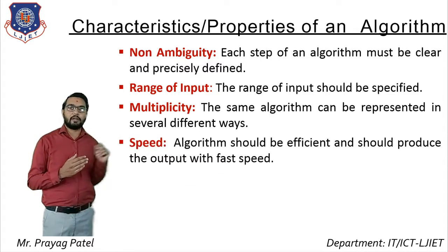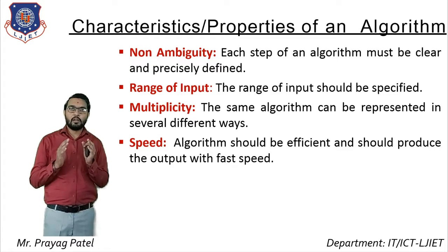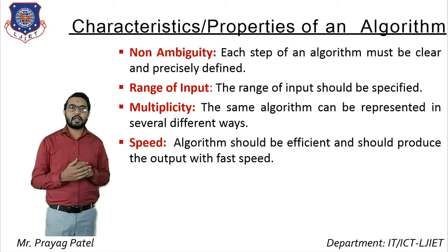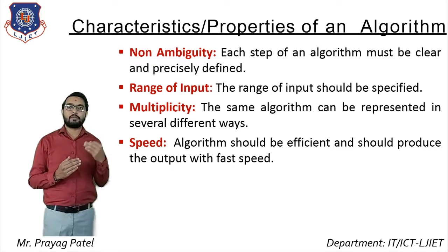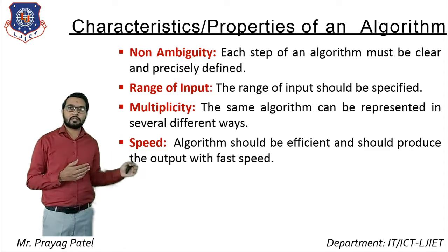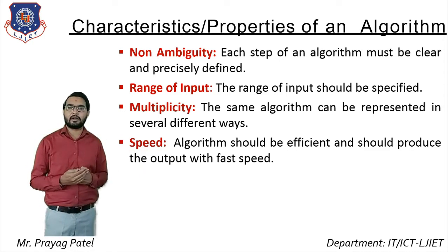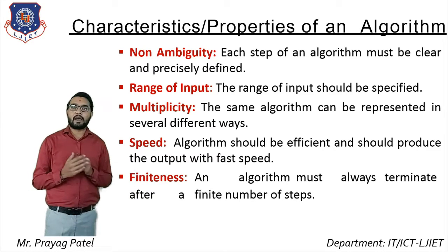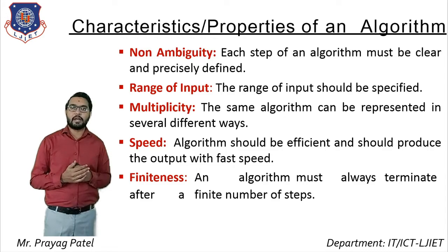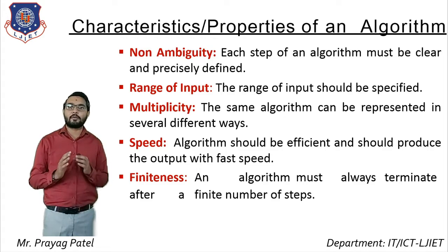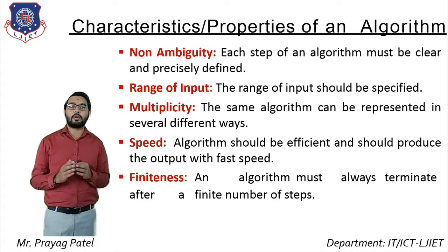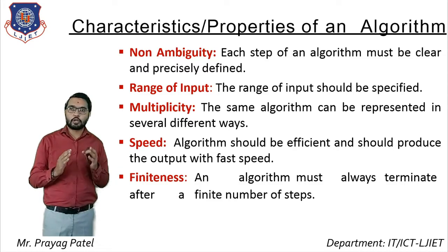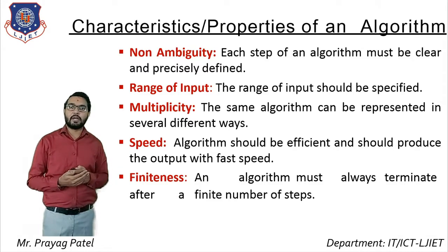The next property is speed. An algorithm should be efficient and produce output at faster speed — whichever algorithm has higher speed is considered a better algorithm. The last property is finiteness: an algorithm must always terminate after a finite number of steps.